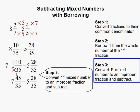To do so, you multiply 35 times 1, then you add 10. That gets you 45 over 35. So our new problem becomes 7 and 45 over 35 subtract 5 and 28 over 35.